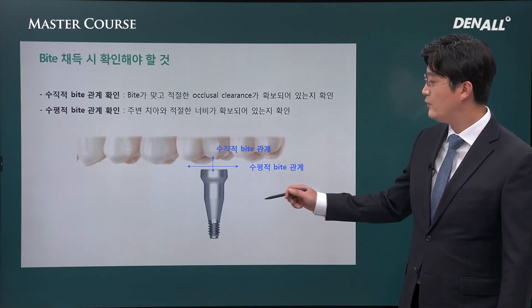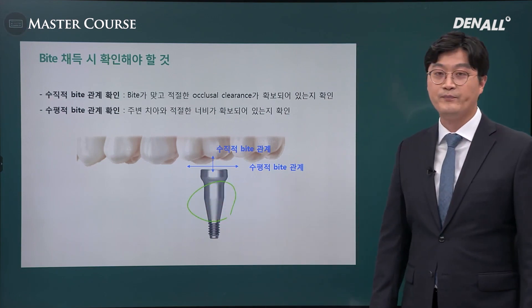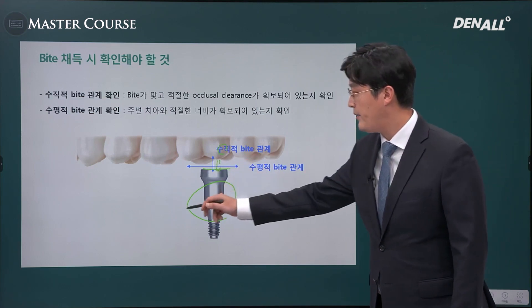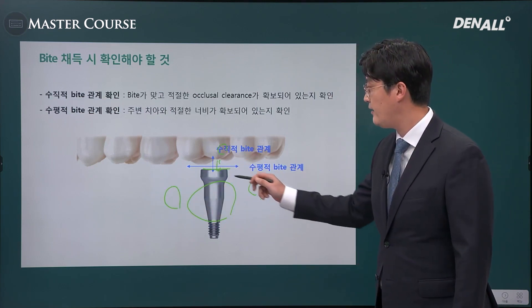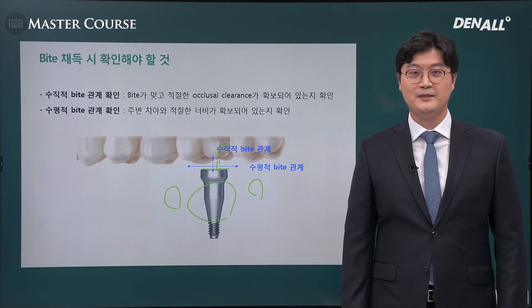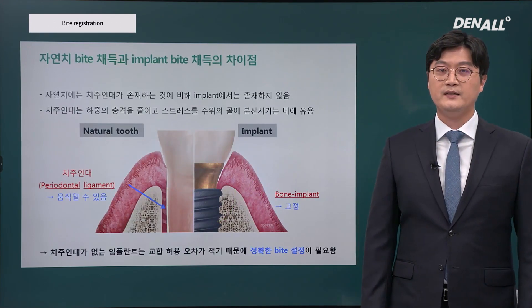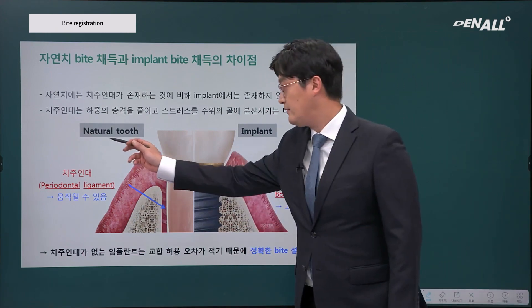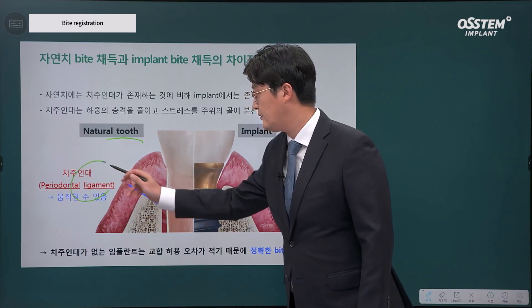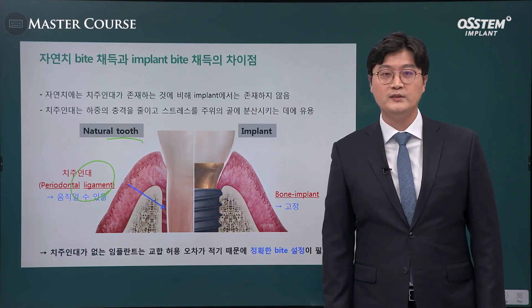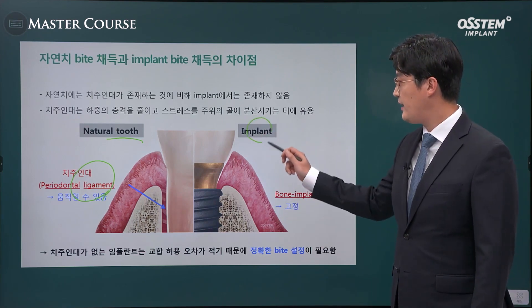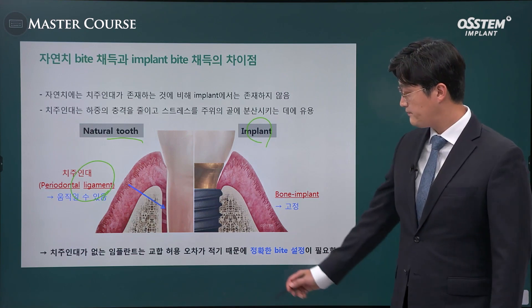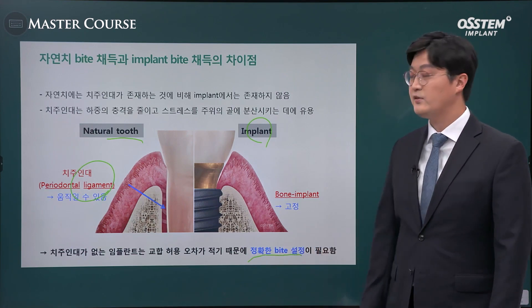In bite registration, things to be checked: when you use a bite index, always check the relationship between the bite index and the opposing tooth space, plus the both-sides tooth space relationship. The difference between taking bite registration for natural teeth and implants is important — natural teeth have a periodontal ligament, so errors in the procedure can be compensated, but implants don't move due to osseointegration. Hence, you have to set an accurate bite.